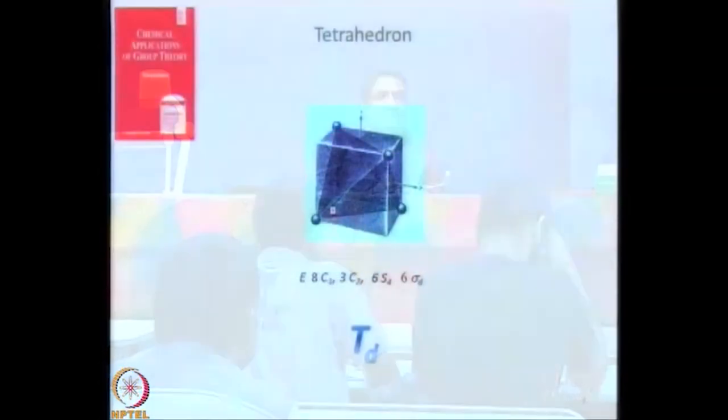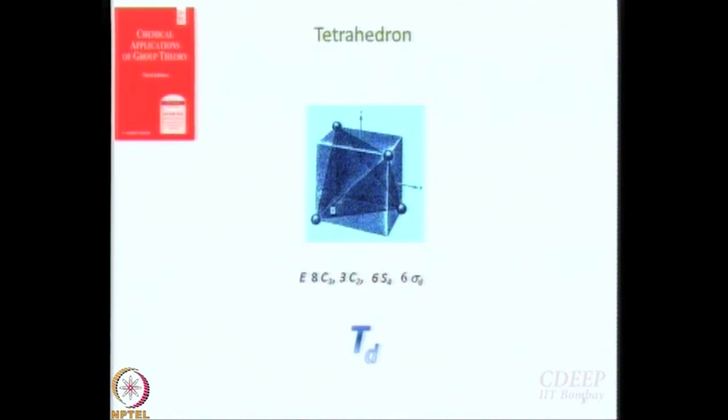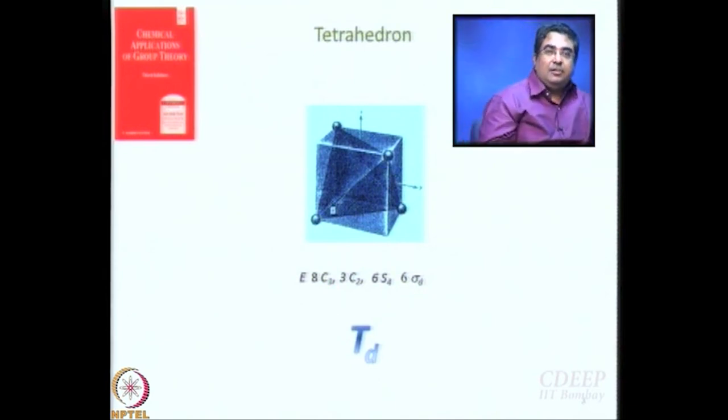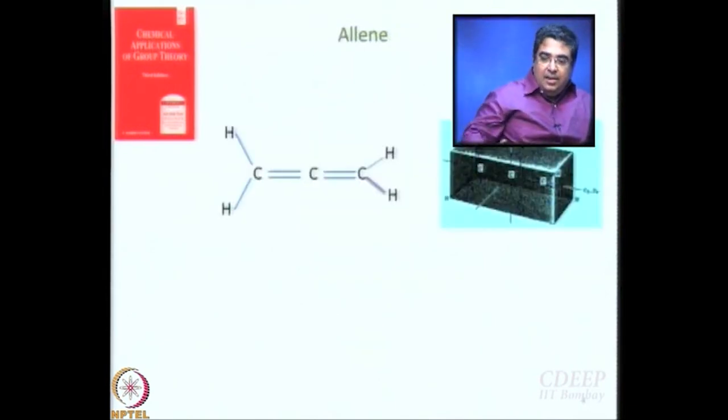So that is tetrahedron. How many operations are there in total? The answer is now in front of you. This is called Td. Depending on which operations are there or not, you can have variants — Th, Te, and so on — which you can look up in Cotton's book. Now let us talk about my favourite molecule, allene.